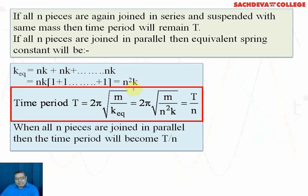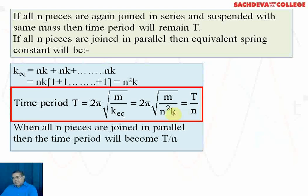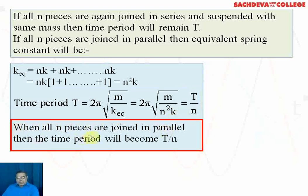The time period is T = 2π√(m/k_eq) = 2π√(m/(n²k)). Since 2π√(m/k) = T, dividing by √(n²) = n gives T_new = T/n. So when all n pieces are joined in parallel, the time period becomes T/n.